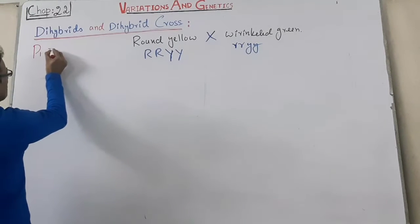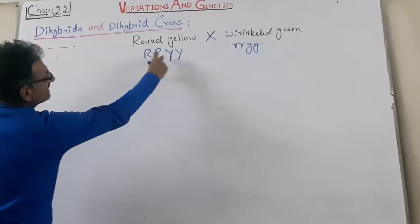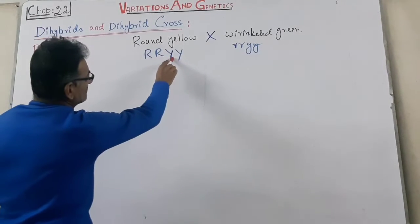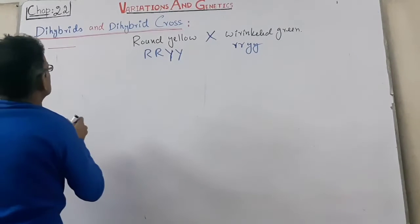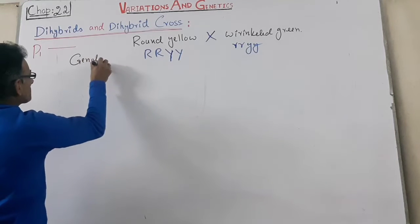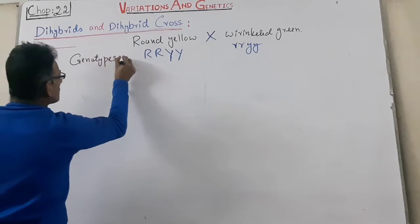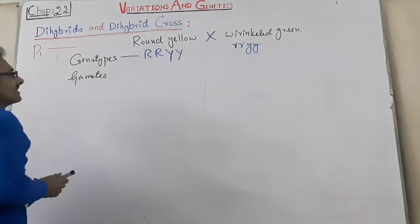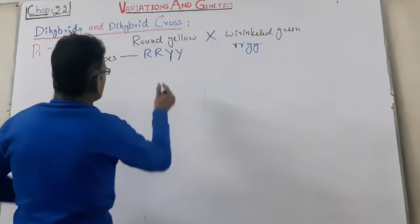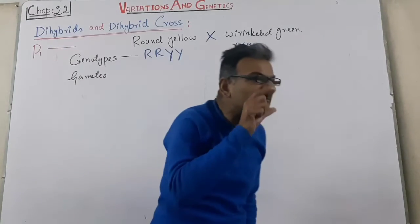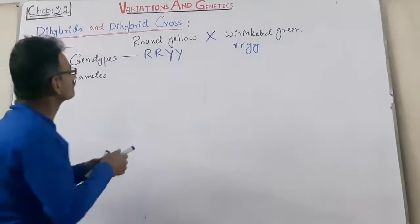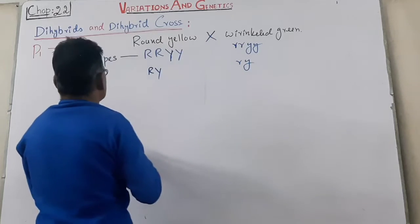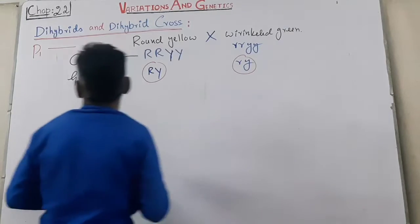The genotypes of the parental generation are capital R capital R capital Y capital Y, and small r small r small y small y. During meiosis, only one of the two alleles will be present in each gamete: capital R capital Y from one parent, and small r small y from the other.